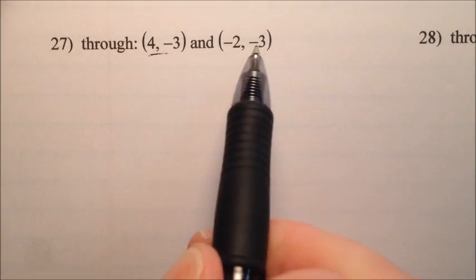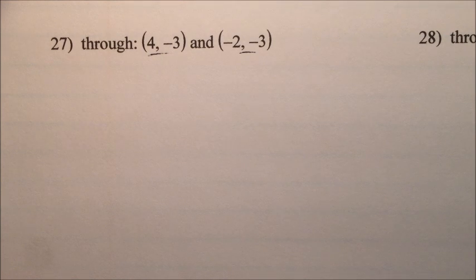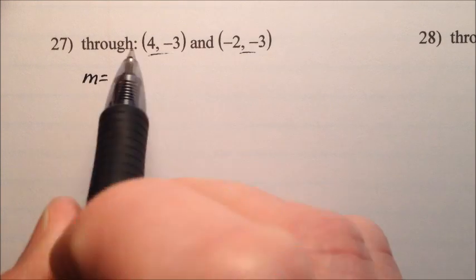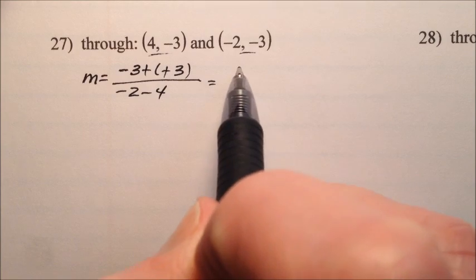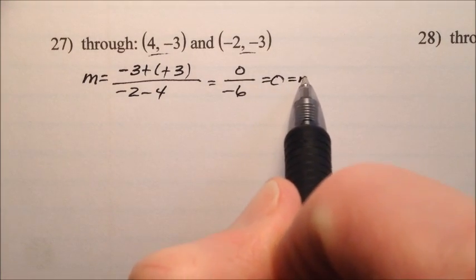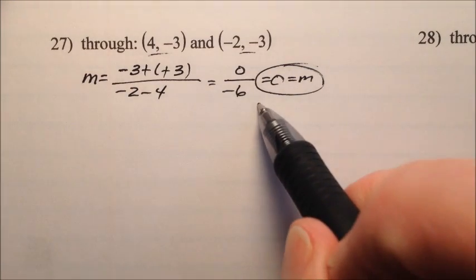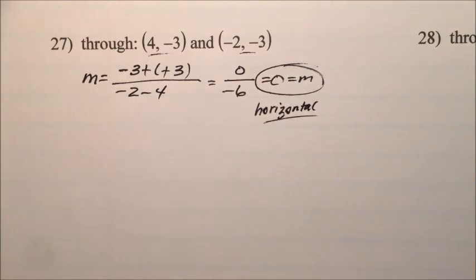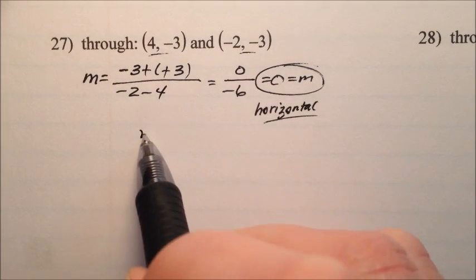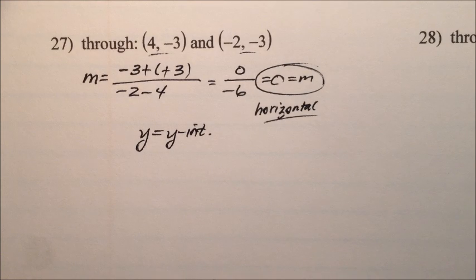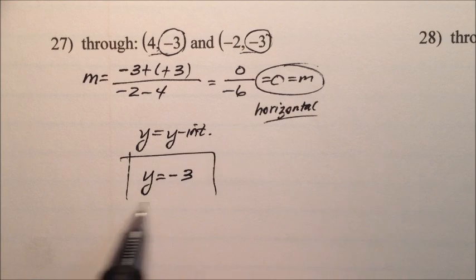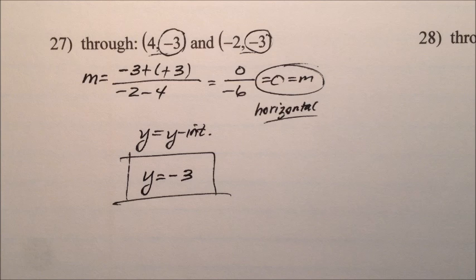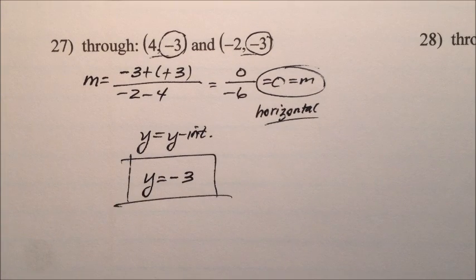In number 27, I have two more points. Finding the slope: y2 minus y1 is negative 3 minus negative 3, over negative 2 minus 4, which gives 0 over negative 6. The slope is 0, so this is a horizontal line. For horizontal lines, the equation is y equals the y value. Both y values are negative 3, so y equals negative 3. Number 27: two points, horizontal line, y equals negative 3.